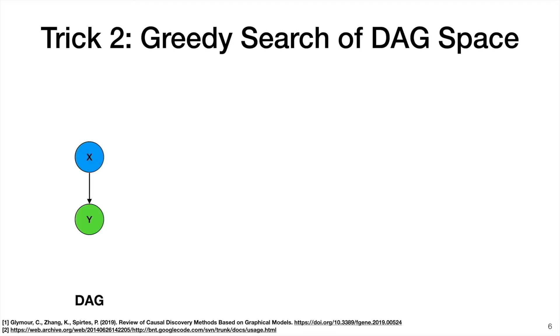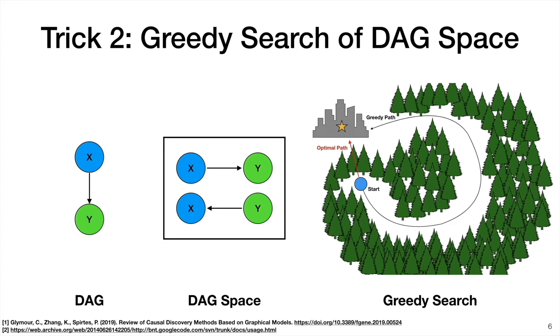So trick two is a greedy search of the DAG space. So there are three key concepts here. First is a DAG, which should be familiar since they've been discussed in the previous two videos. Next is a DAG space, or in other words, the space of all possible DAGs. For example, consider the space of DAGs with two nodes and one edge, which is shown here. There are only two possibilities. X could point to Y or Y could point to X. Then finally, we have the notion of a greedy search, which is a widely used idea in optimization. In short, a greedy search is an optimization strategy that picks what's best in the short run as opposed to the long run. And this is usually done using a heuristic or rule of thumb.